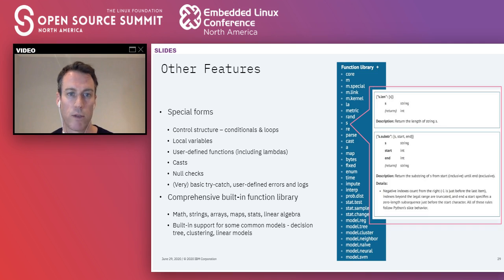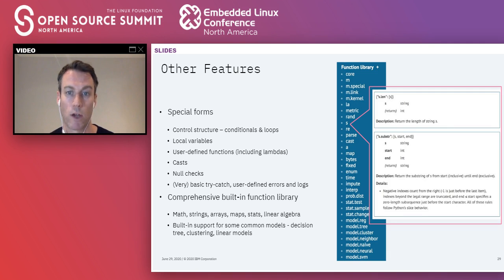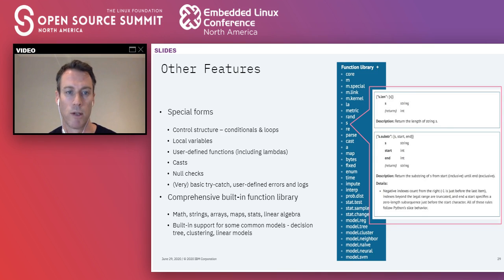PFA supports control structures such as conditionals and various types of looping. You can create and manipulate local variables, as well as arbitrary user-defined functions including anonymous functions (lambdas). You can cast between types, perform null checks, and do basic error handling. There's a comprehensive built-in function library covering numerical math, string processing, array and map functions, statistical functions, linear algebra, and good built-in support for traditional machine learning models such as linear models, clustering, and decision trees.